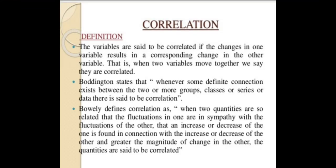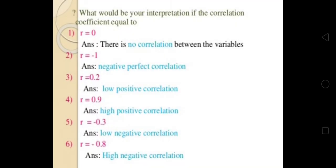When two quantities are so related that the fluctuations in one are in sympathy with the fluctuations of the other, that an increase or decrease of the one is found in connection with the increase or decrease of the other, and greater the magnitude of change in the other, the quantities are said to be correlated.